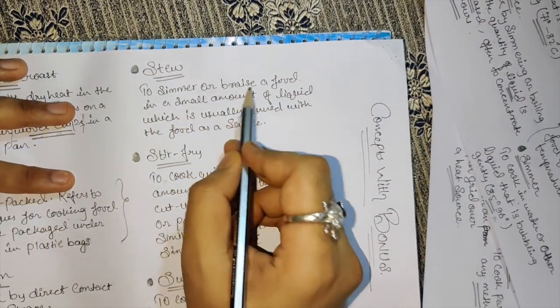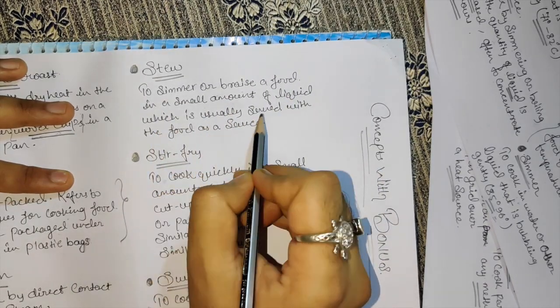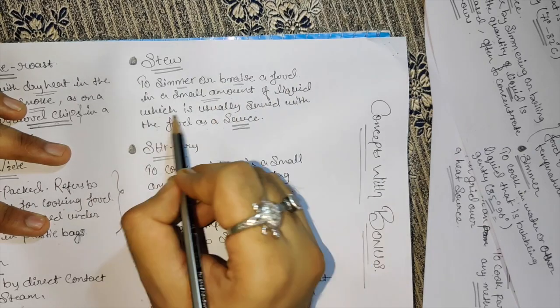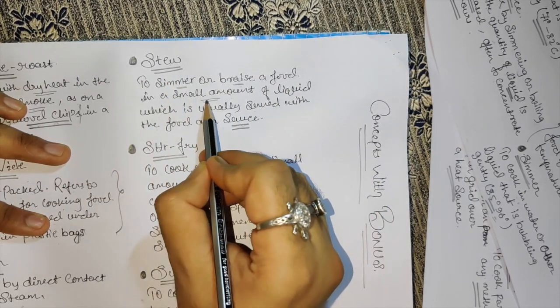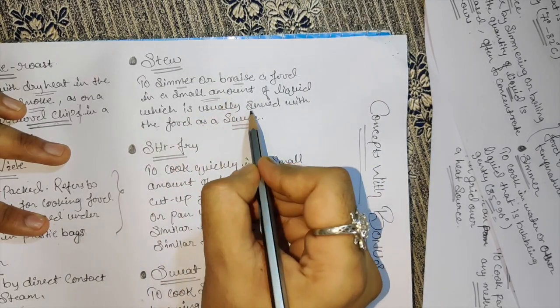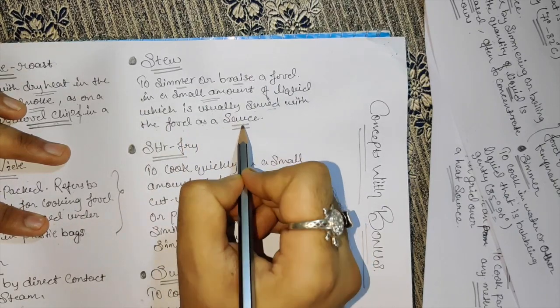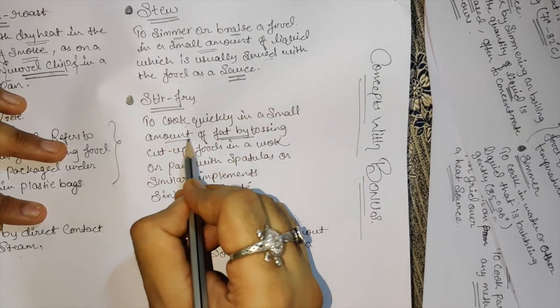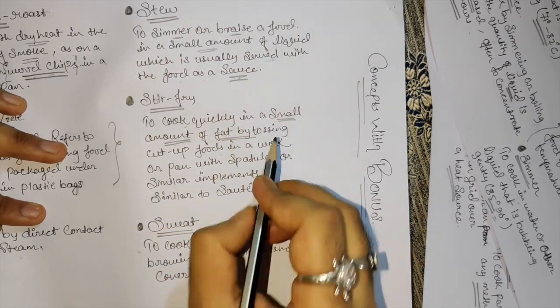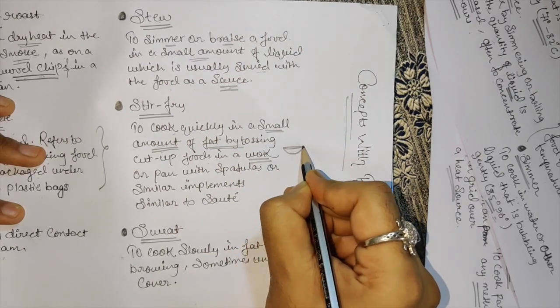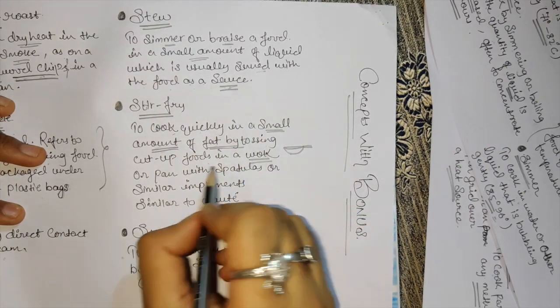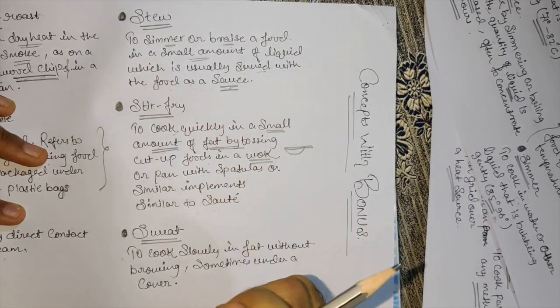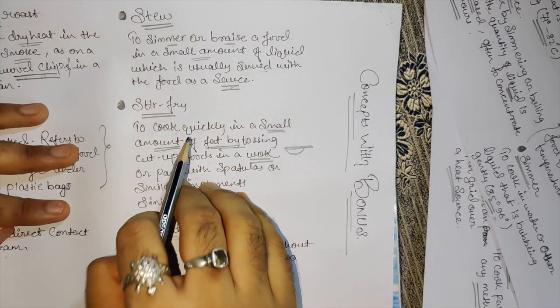Stew - to simmer or braise food in small quantity of liquid which is usually served with the food as sauce. Small amount of liquid comes out from the vegetable or meat, and that's served with the food. Stir fry - to cook quickly in small amount of fat by tossing cut-up food in a wok with a spatula, similar to sauté.